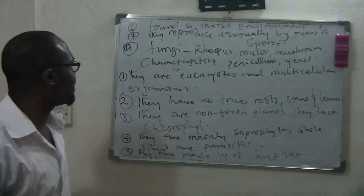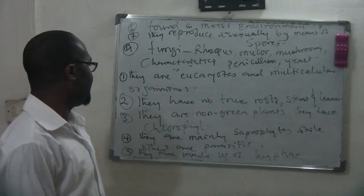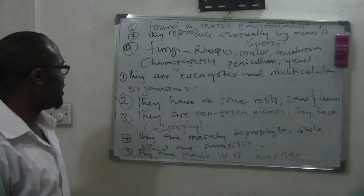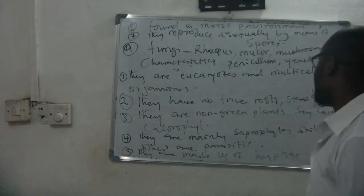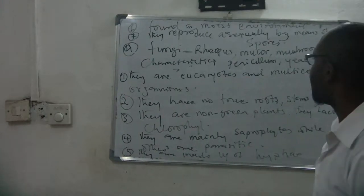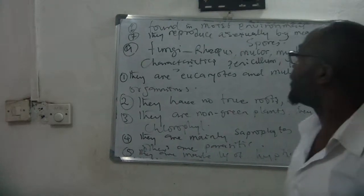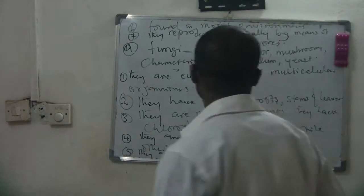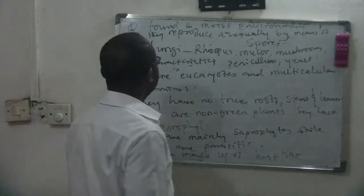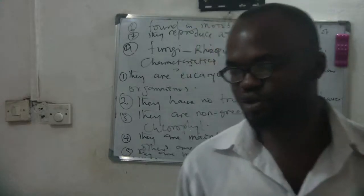So these are the characteristics of fungi: they are eukaryotes and multicellular; they have no true roots, stems, or leaves; they are non-green plants that lack chlorophyll; they are mainly saprophytes while others are parasitic; they are made up of hyphae, which are delicate threads; they are found in moist environments; and they reproduce asexually by means of spores. Examples of fungi are Rhizopus, Mucor, mushroom, Penicillium, and yeast.